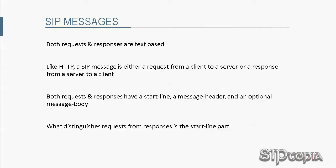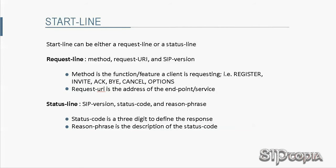What distinguishes requests from responses is the start line. The start line can be either a request line or a status line. A request line is composed of three sections: method, request URI, and SIP version. Similarly, a status line is composed of three sections: SIP version, status code, and reason phrase.